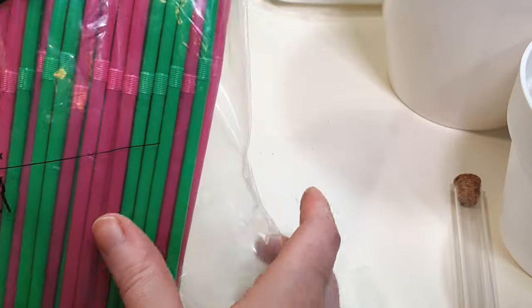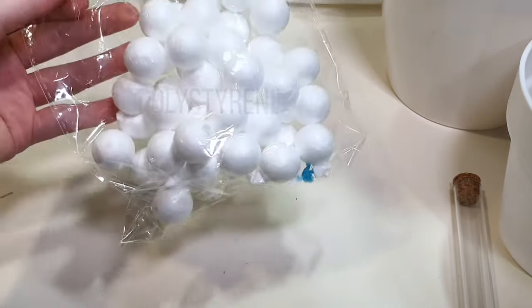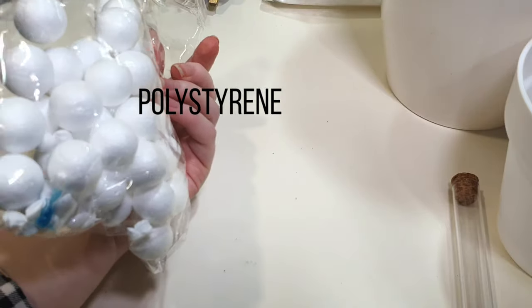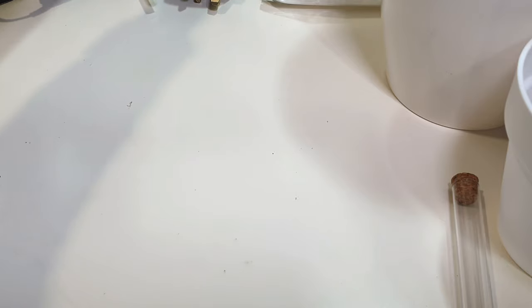These are going to be your inner float for the water level indicator. Polystyrene balls I had floating around from packaging, and I'm also going to be using some smoothie straws or plastic tubes as I mentioned.